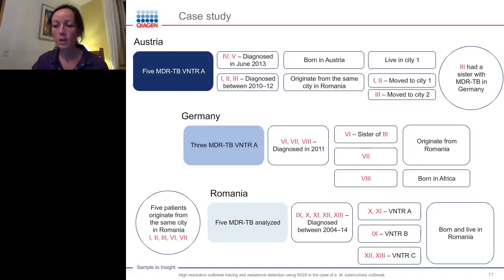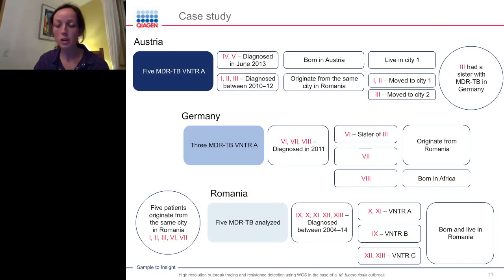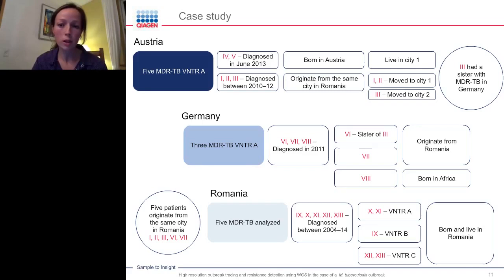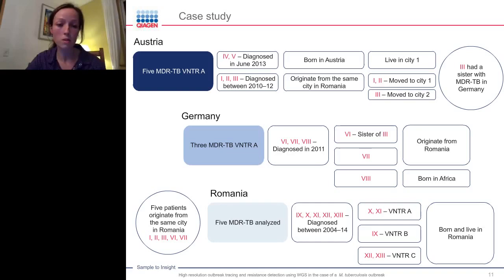Because five patients were recorded as originating from the same city in Romania, the Romanian National TB contact point was informed. Since there had been no systematic genotyping of TB isolates in Romania, all five multidrug-resistant TB isolates ever detected in that particular region were sent to Austria for analysis. These five patients were diagnosed between 2004 and 2014. Isolates from patients 10 and 11 were VNTR genotype A; patient 9 was genotype B; and patients 12 and 13 were genotype C. All five patients were born and still living in Romania at the time of investigation.